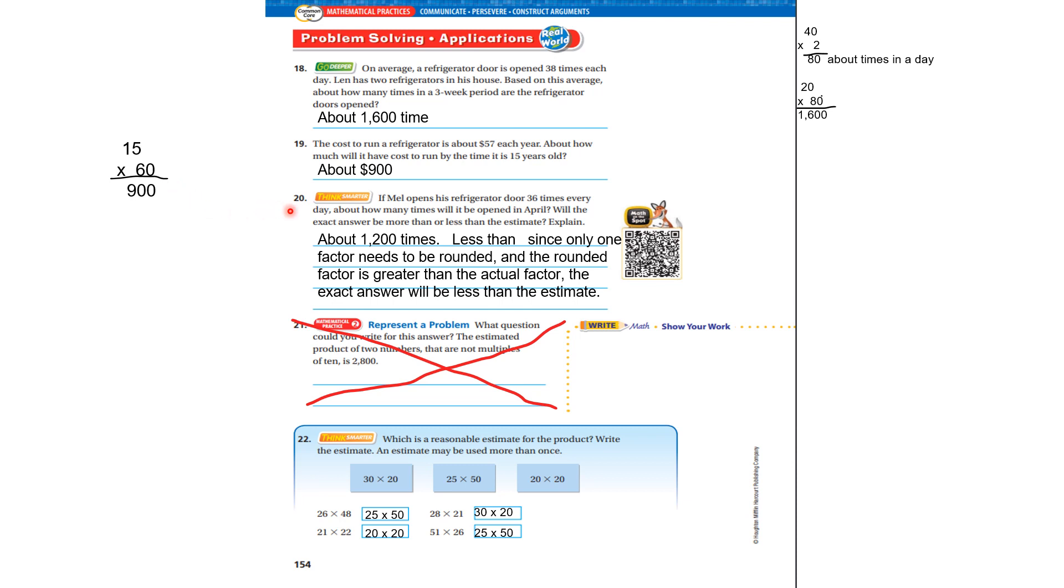If Mel opens the refrigerator door 36 times every day, about how many times will it be opened in April? Will the exact answer be more or less than the estimate explained? Well, it's going to be about 1,200 times, and it's going to be less than the estimate. Since only one factor needs to be rounded, and the rounded factor is greater than the actual number, the exact answer will be less than the estimate.